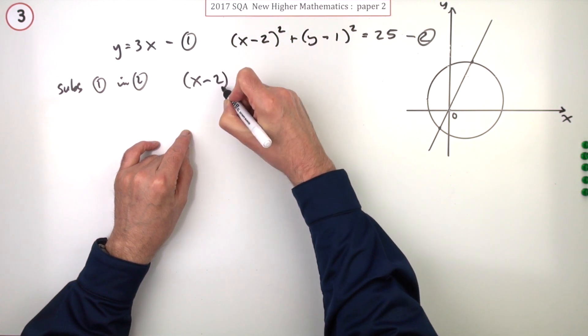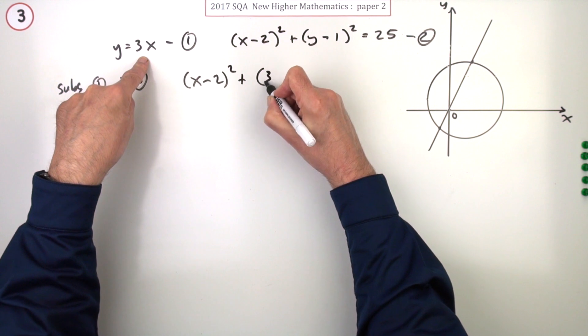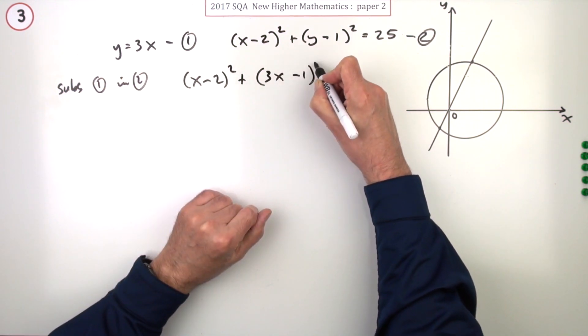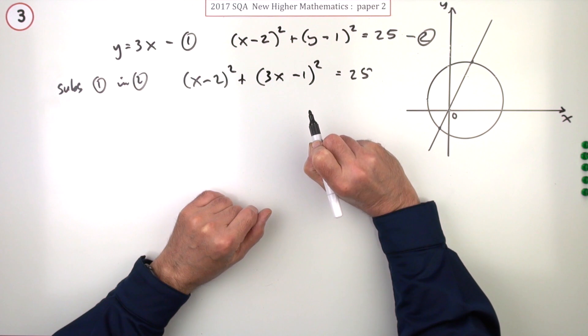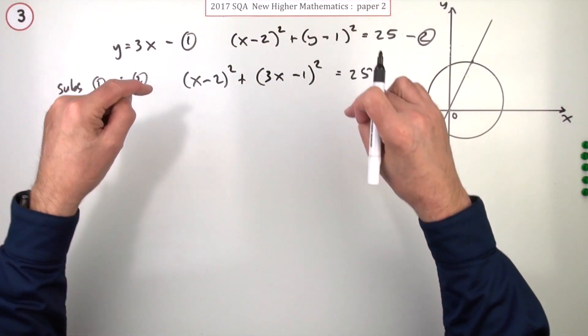That's going to read (x - 2)² plus, and luckily y is only made up of one term, 3x, so (3x - 1)² equals 25. Having done the substitution gets you the first mark.